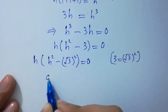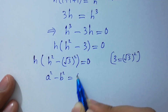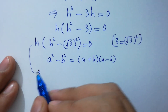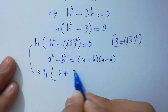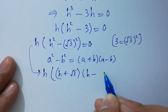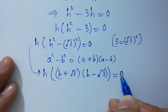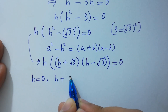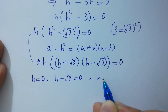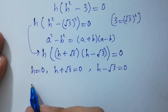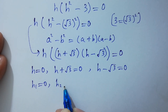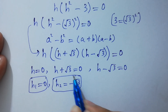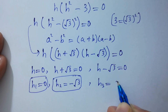As we know that a squared minus b squared equals (a plus b)(a minus b), it will be equal to h times (h plus √3) times (h minus √3) equal to 0. So h equals 0, or h plus √3 equals 0, or h minus √3 equals 0. Therefore h₁ equals 0, h₂ equals minus √3, and h₃ equals plus √3.